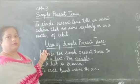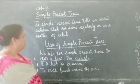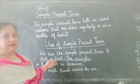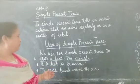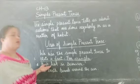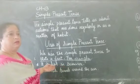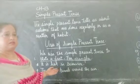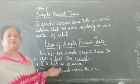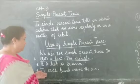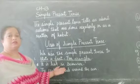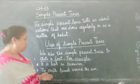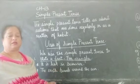So what are the uses of simple present tense? We use simple present tense when we need to state a fact that is true. For example, 'It is hot in summer.' This is a statement of fact — something which is true and never changes. It is always hot during the summer season. Another example: 'The earth travels around the sun.' This is also a fact that never changes.